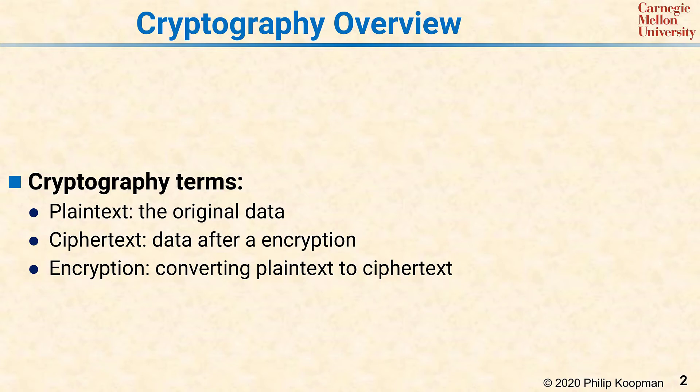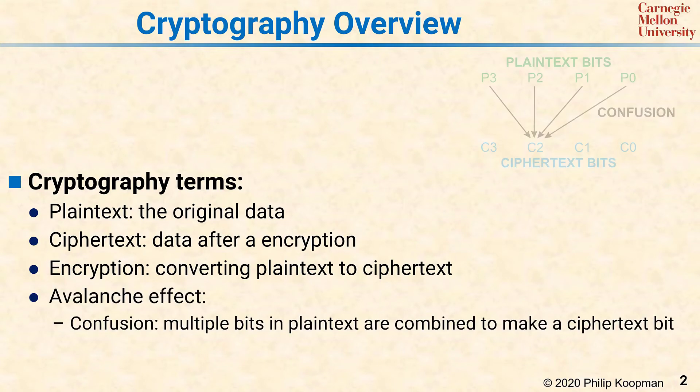A key concept in knowing whether encryption is good or not is whether it displays the avalanche effect. In an avalanche effect, there are two pieces.